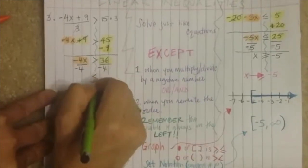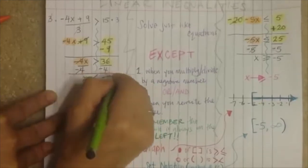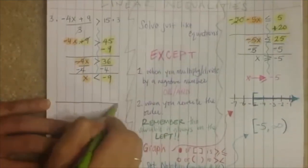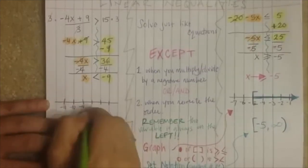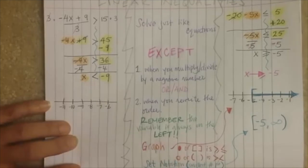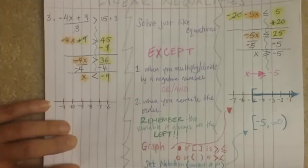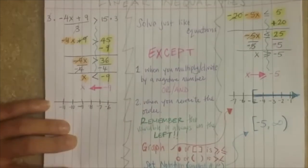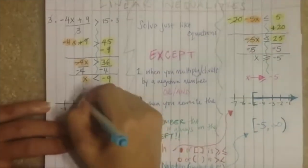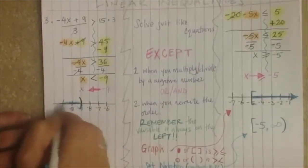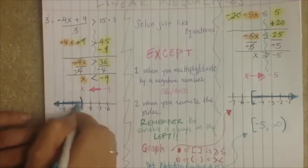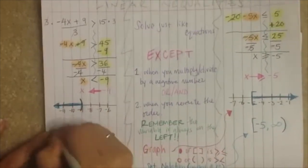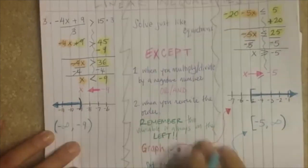I want to divide by negative 4. Remember, if you divide by a negative number you must change the direction of the inequality, so I get x is less than negative 9. Listening check: put a box around negative 9. Graphing this: it's an open circle — I'll use a parenthesis — starting at negative 9 and going to the left, all the way to negative infinity.